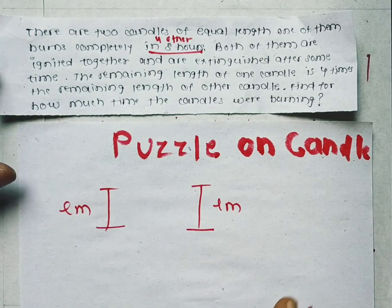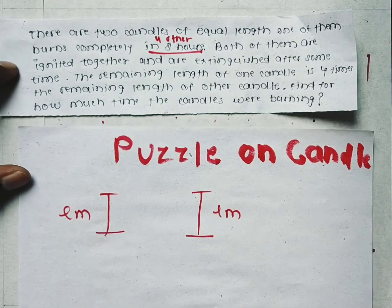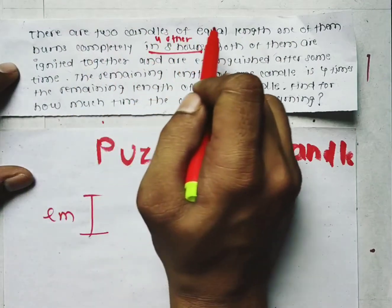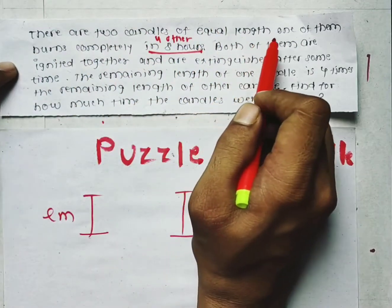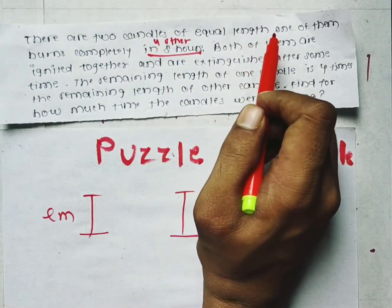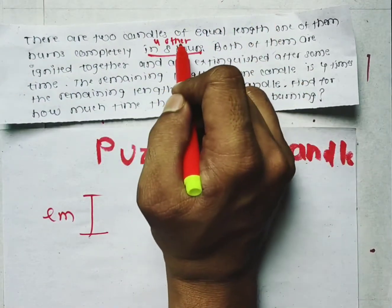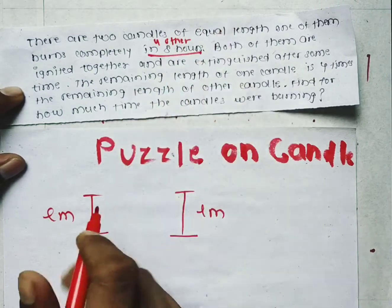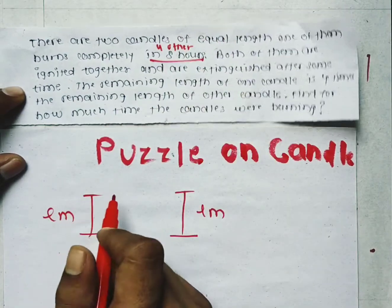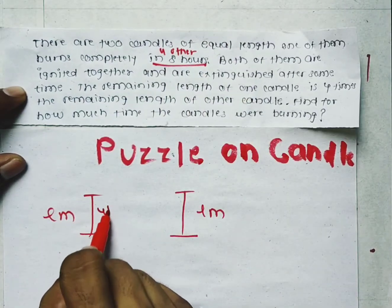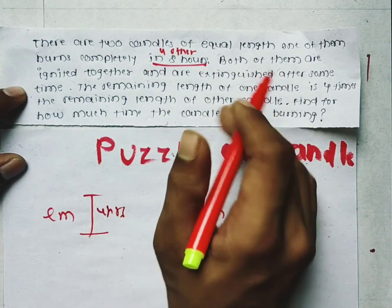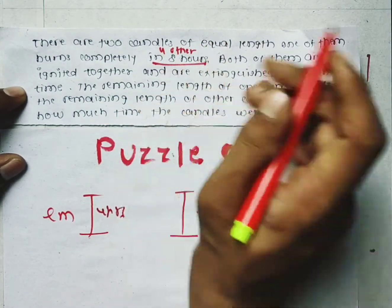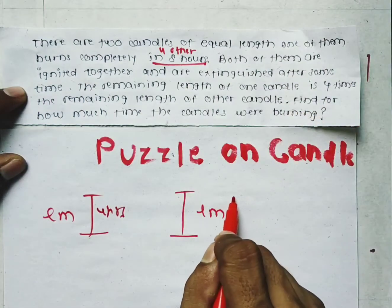There is a mistake in the question, so let's correct it. There are two candles of equal length — one of them burns completely in 4 hours. If this candle takes 4 hours to burn completely, then the other will take 8 hours to burn completely.